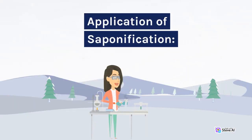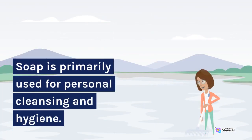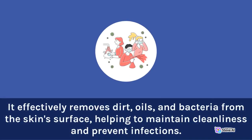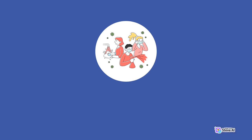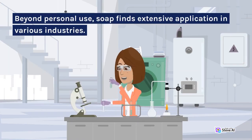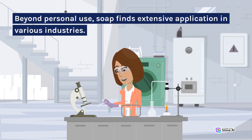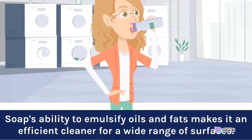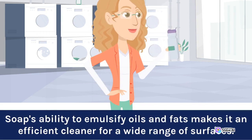Application of Saponification. Soap is primarily used for personal cleansing and hygiene. It effectively removes dirt, oils, and bacteria from the skin's surface, helping to maintain cleanliness and prevent infections. Beyond personal use, soap finds extensive application in various industries. Cleaning and detergent products, including laundry soaps, dishwashing liquids, and multi-purpose cleaners, all rely on the saponification process. Soap's ability to emulsify oils and fats makes it an efficient cleaner for a wide range of surfaces.